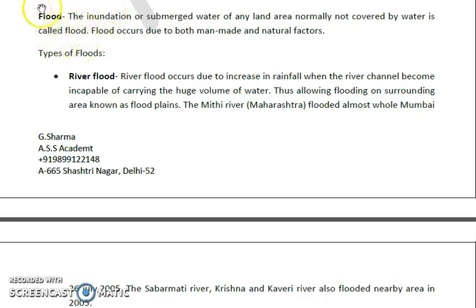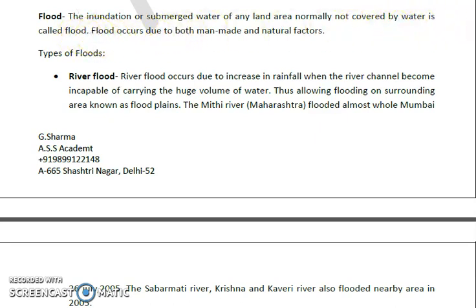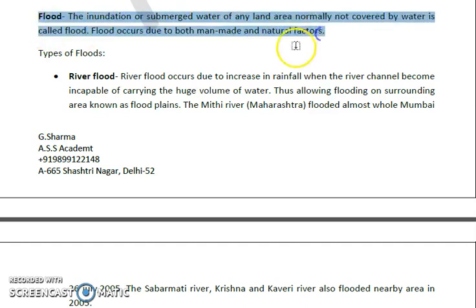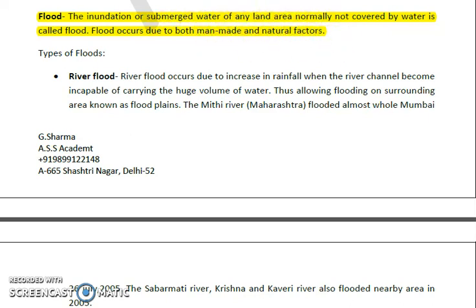Flood is the inundation or submergence of any land area which is generally not covered by water. Generally, people say flood occurs when rivers start overflowing and inundate human settlements or nearby areas. Flood takes place due to both man-made and natural factors.